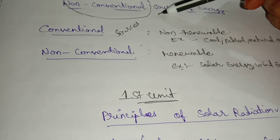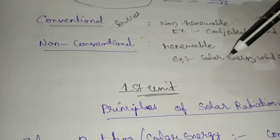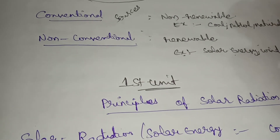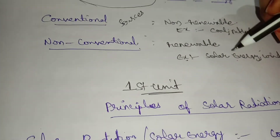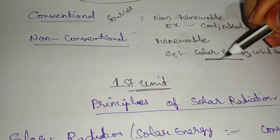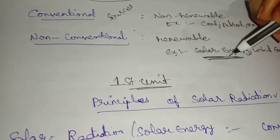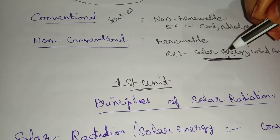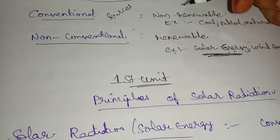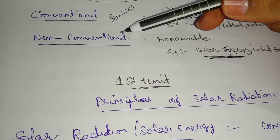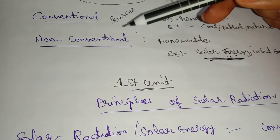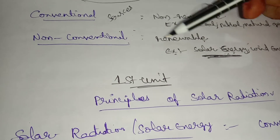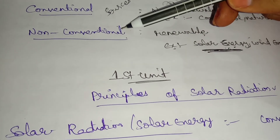The main subject is non-conventional sources, which include wind energy, tidal energy, solar energy, and geothermal energy. The first three units cover solar energy, with solar energy being the first unit.